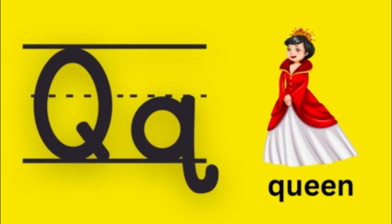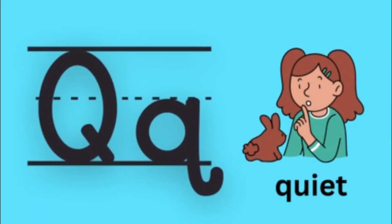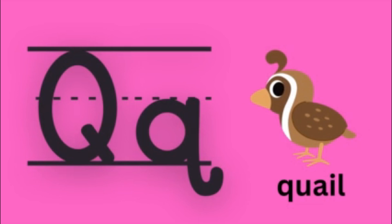Next, Q for Quiet. Q for Quiet. Come on children, say along with me — Q for Quiet. Q for Quiet. Correct! Q for Quiet.